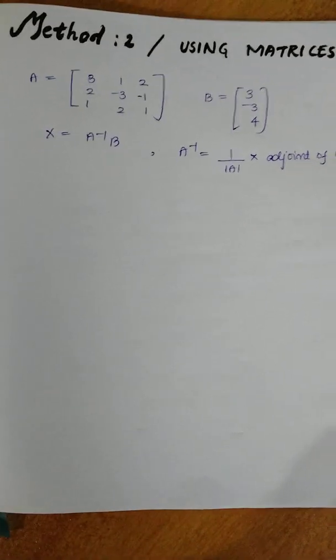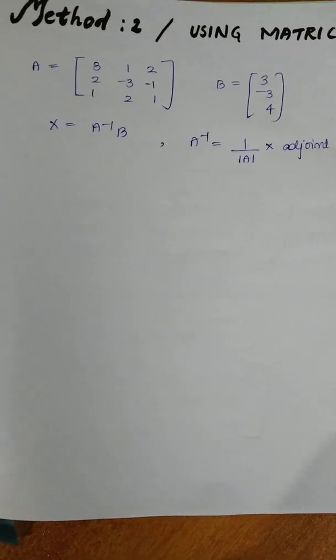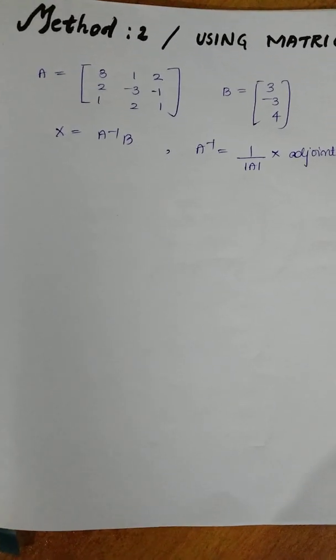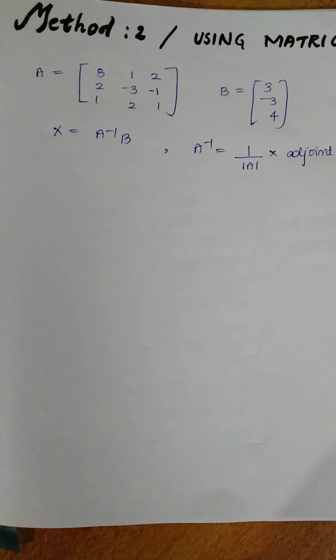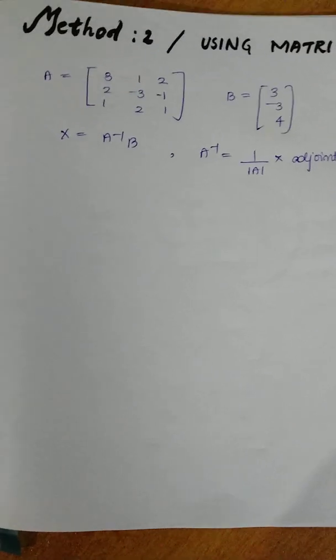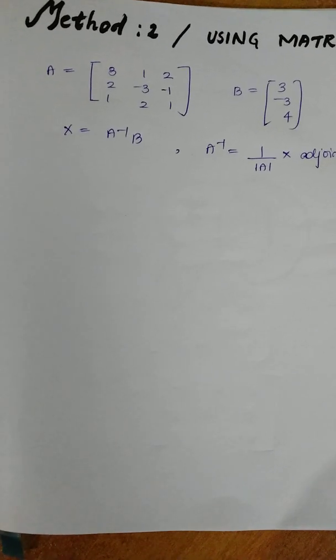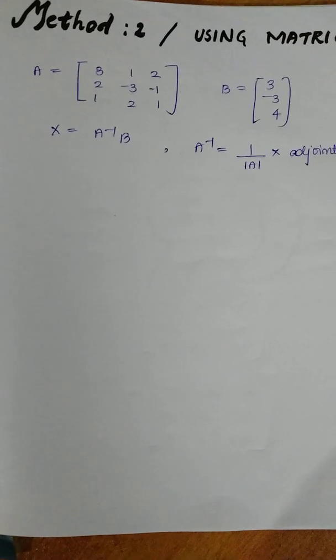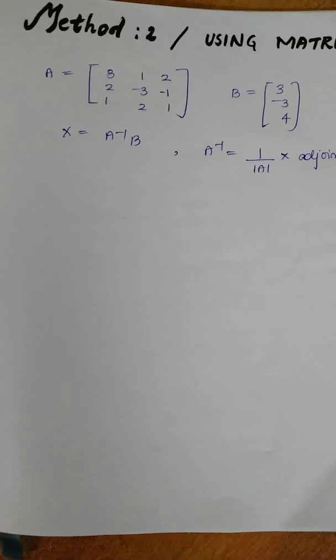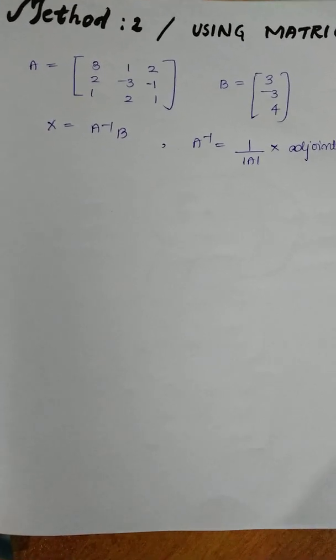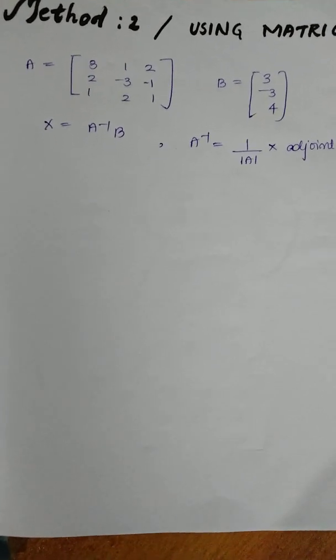Hi all, this is the second part of the solution of the linear system of equations. That is the third method, Kramer's rule, or the method of determinants.